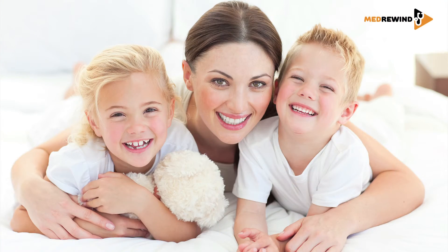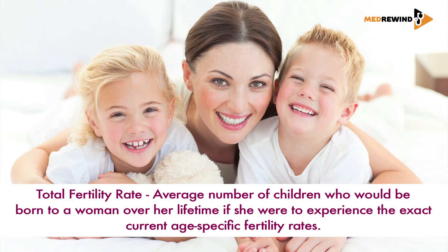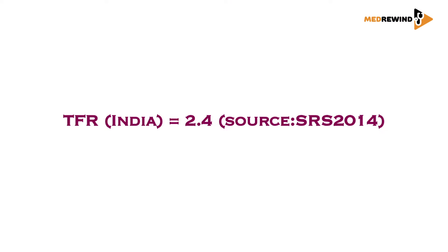Then we come to another indicator: Total Fertility Rate, or TFR. TFR basically tells you how many children a mother will have in her entire lifetime — her entire reproductive age group — if she undergoes births at the current fertility pattern. Our target for TFR is 2.1, which roughly connotes to two children, and right now we have achieved a TFR of 2.4, so we are very close to the target.